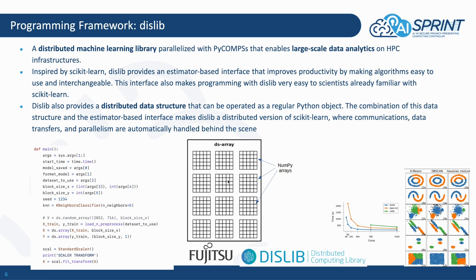Dislib enables parallelization on data through a distributed data structure that can be operated as a regular Python object in the user code. The combination of this data structure and the estimator-based interface is what makes dislib a distributed version of scikit-learn, where all communication, data transfer, and parallelism are automatically handled by the COMPs runtime.